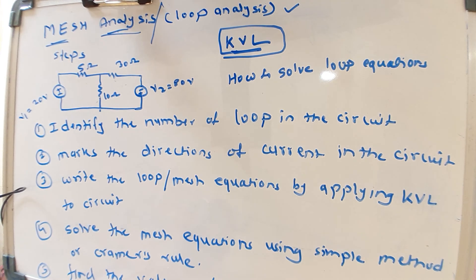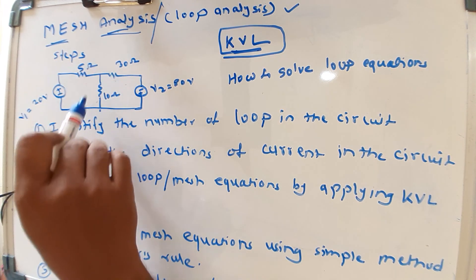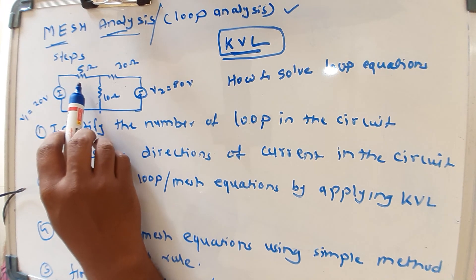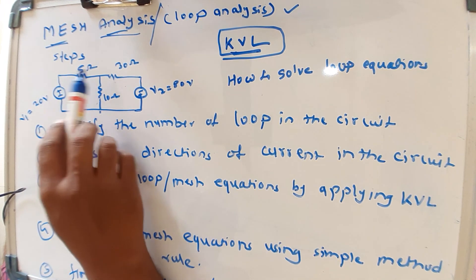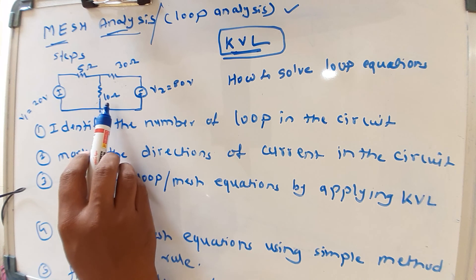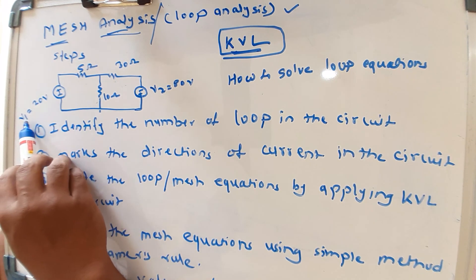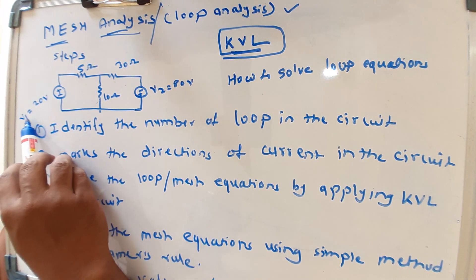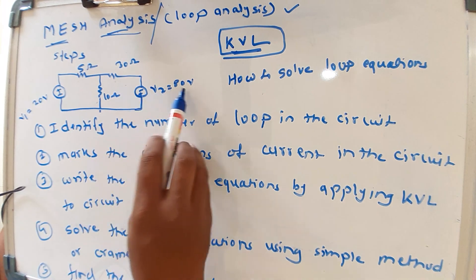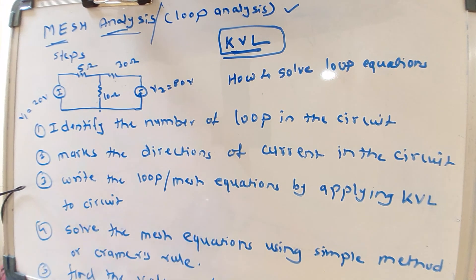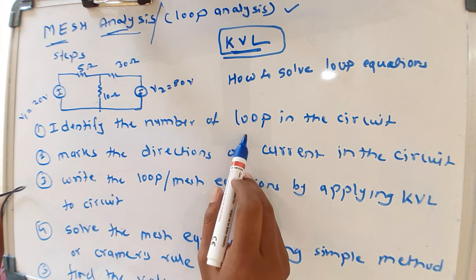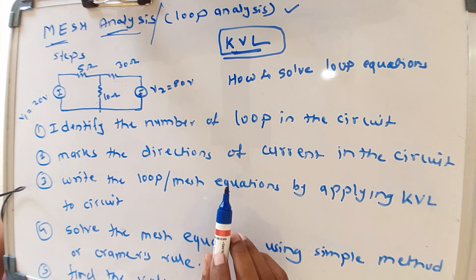In this circuit we have three resistances: 5 ohm, 30 ohm, and 10 ohm. We also have two voltage sources — V1 with a value of 20 volts and V2 with a value of 80 volts. The first step is to identify the number of loops in the circuit.